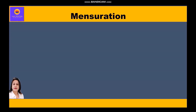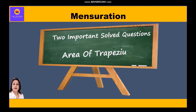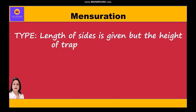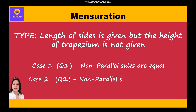Hello everyone. In this video on mensuration, we are going to take up two very important questions related to the area of a trapezium. In these questions, the length of all the sides is given but the height of the trapezium is not given. There are two cases involved: Case 1, non-parallel sides are equal; Case 2, non-parallel sides are unequal. We will first calculate the height of the trapezium and then find the area using the formula.